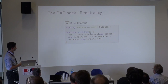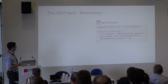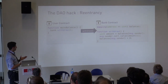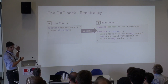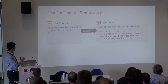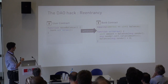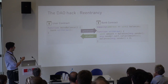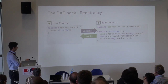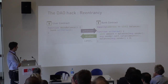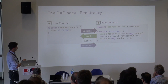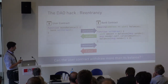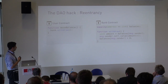The problem is that the balance update is not executed atomically. Let me show you the intended behavior first. A user contract holds a reference to this bank contract and calls the withdraw function. Imagine the user contract has 10 ether in its balance — that amount gets sent back. If the user contract calls withdraw again, the idea is that the second call would not send any ether because the balance has been zeroed out.